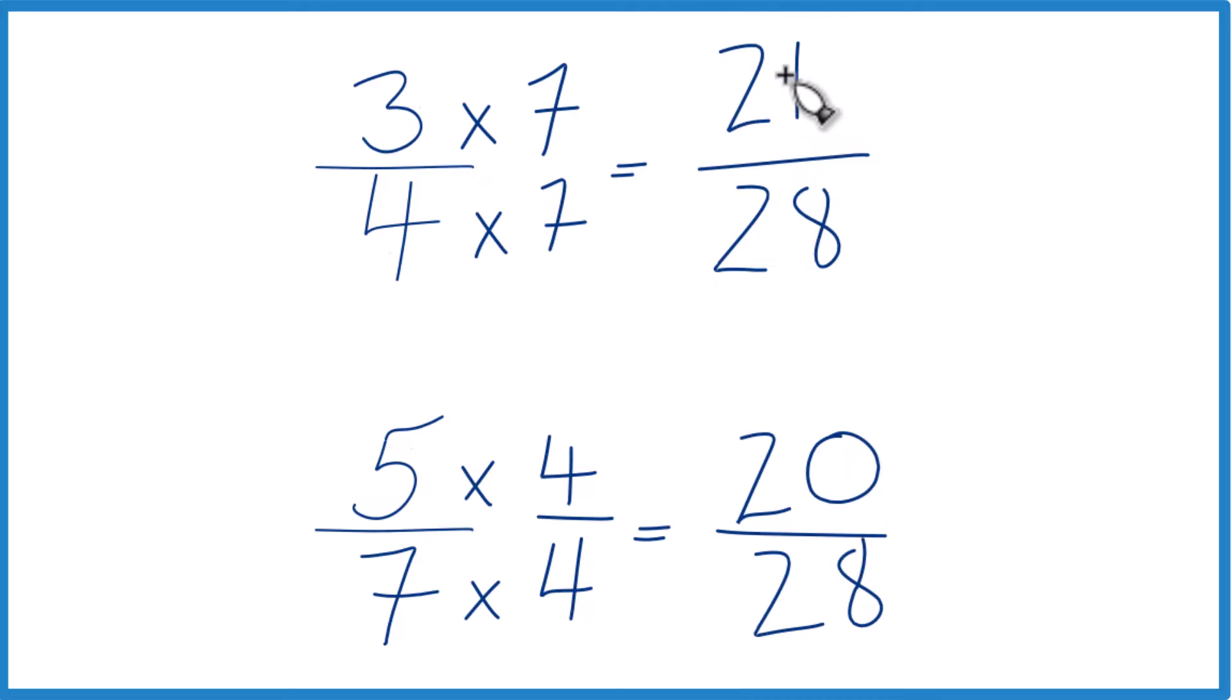Let's compare the numerators. 21 is larger than 20, so 21 28ths, that's larger than 20 28ths. Only by 1 28th, but it's still larger.